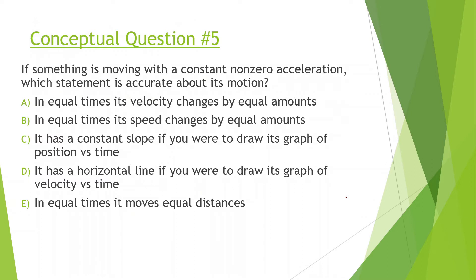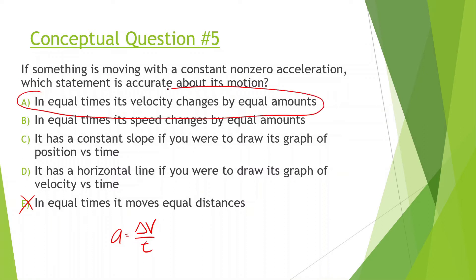If something is moving with a constant non-zero acceleration, which statement is accurate about its motion? We have: velocity changes by equal amounts in equal times; speed changes by equal amounts; constant slope on a position-versus-time graph; horizontal line on a velocity-versus-time graph; or it moves equal distances in equal times. Since it's getting faster and faster, it won't move equal distances in equal time. The formula for acceleration is the change in velocity over time, so in equal times its velocity changes by equal amounts — not speed, but velocity.